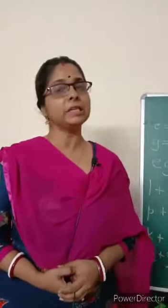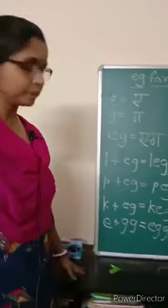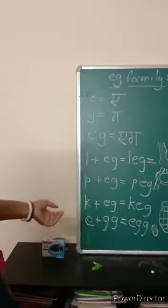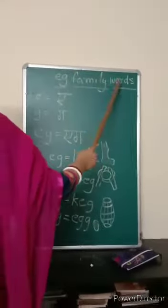That is CAT, BAT, RAT and so on. Now today I will teach you EG family words. Now we'll see on the blackboard. This is the blackboard. EG family words.